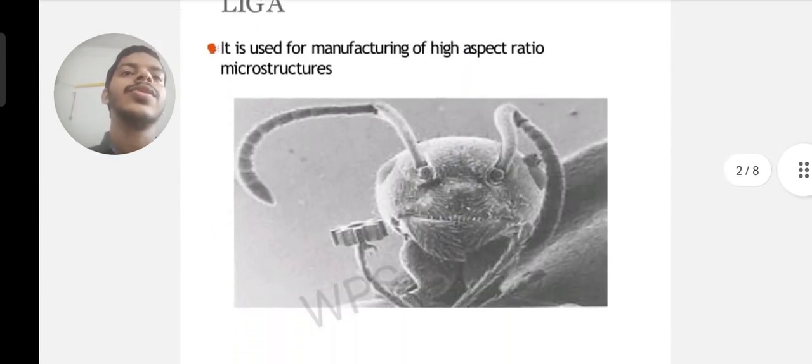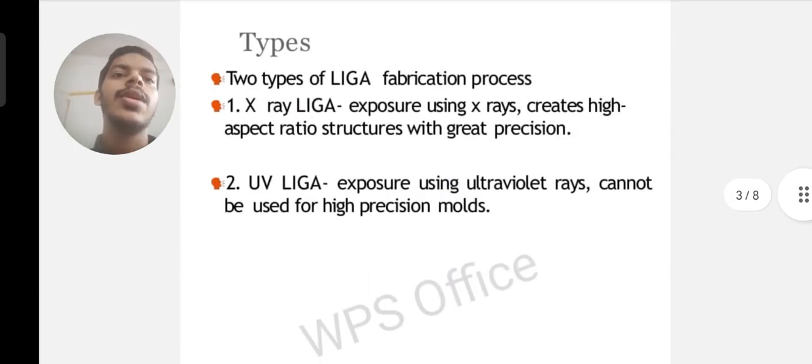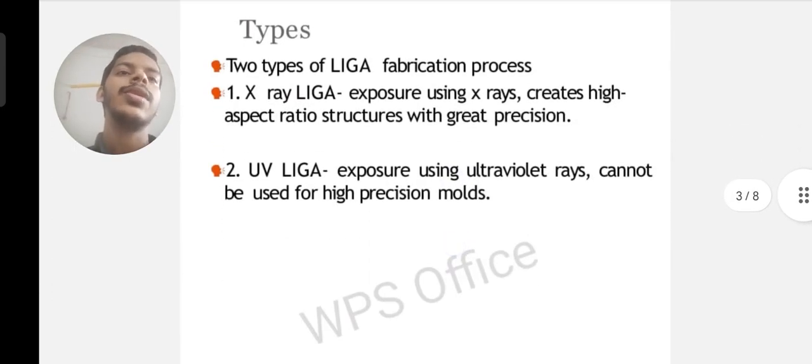It is used for manufacturing of high aspect ratio microstructures. There are two types of LIGA fabrication process. One is X-ray LIGA.